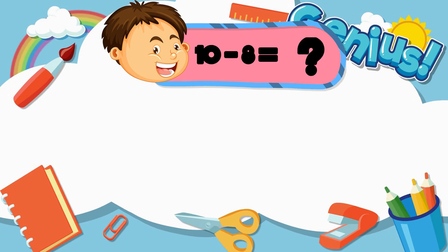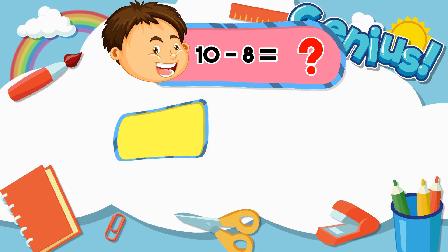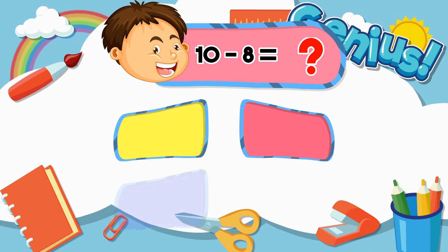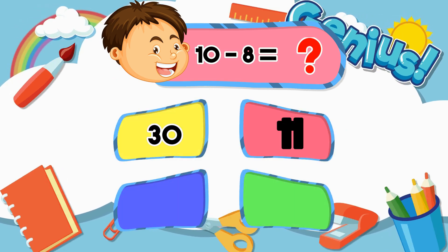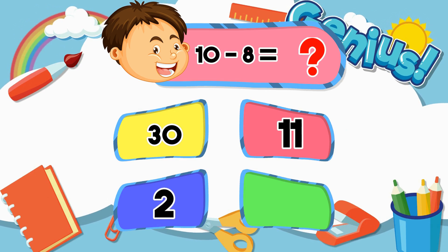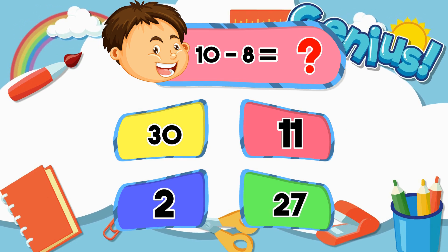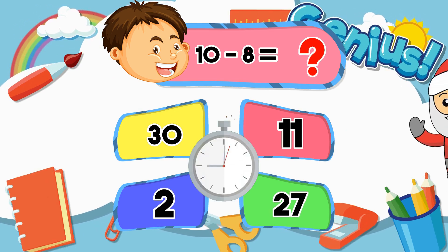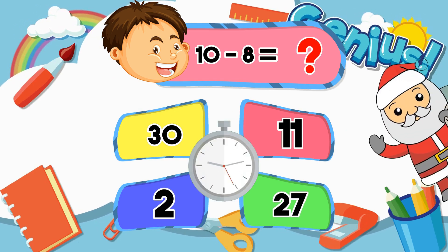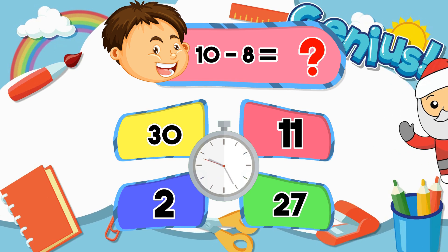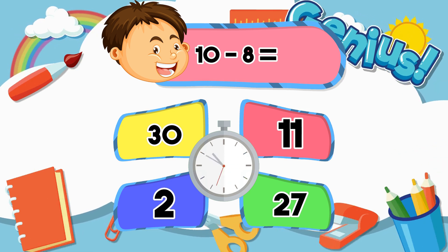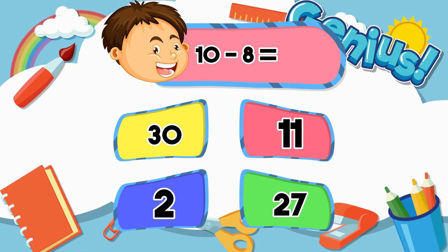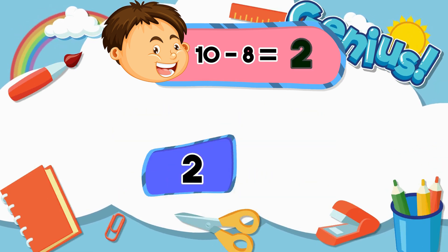What is 10 minus 8? Options: 30, 11, 2, 27. Answer: 2.